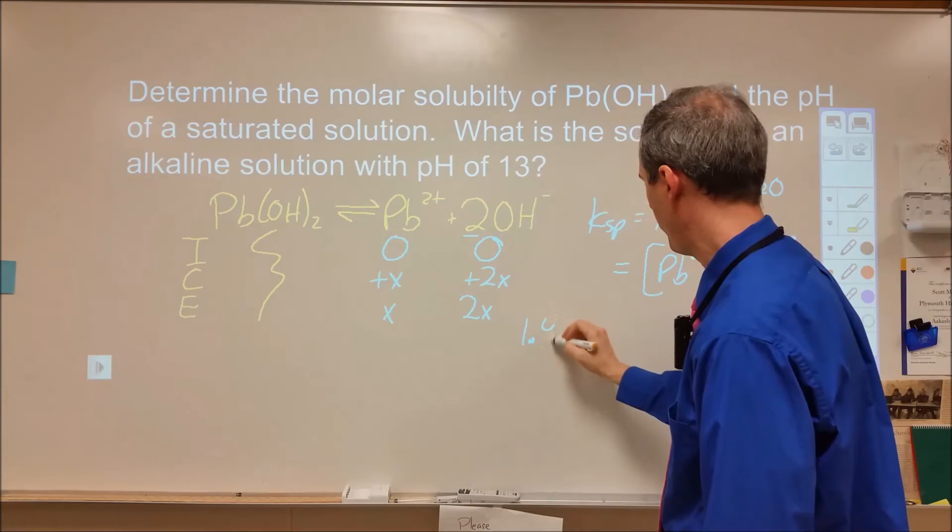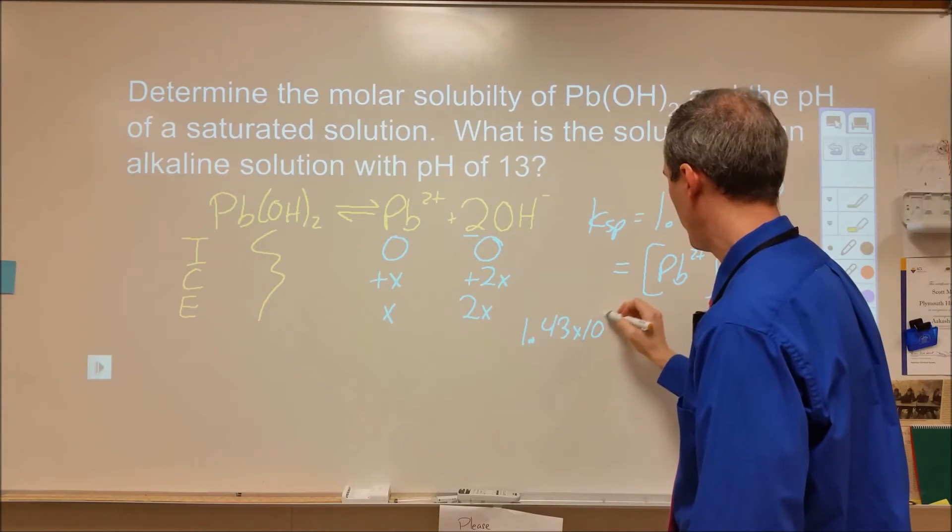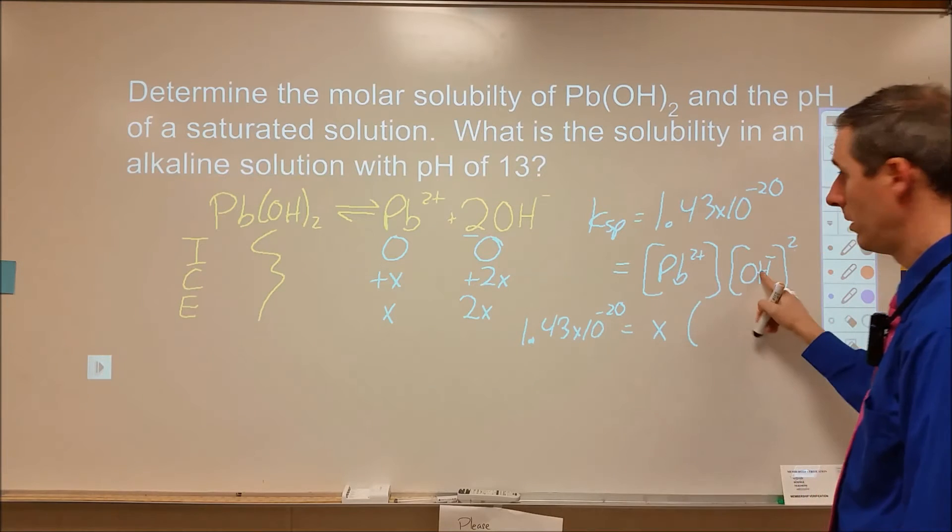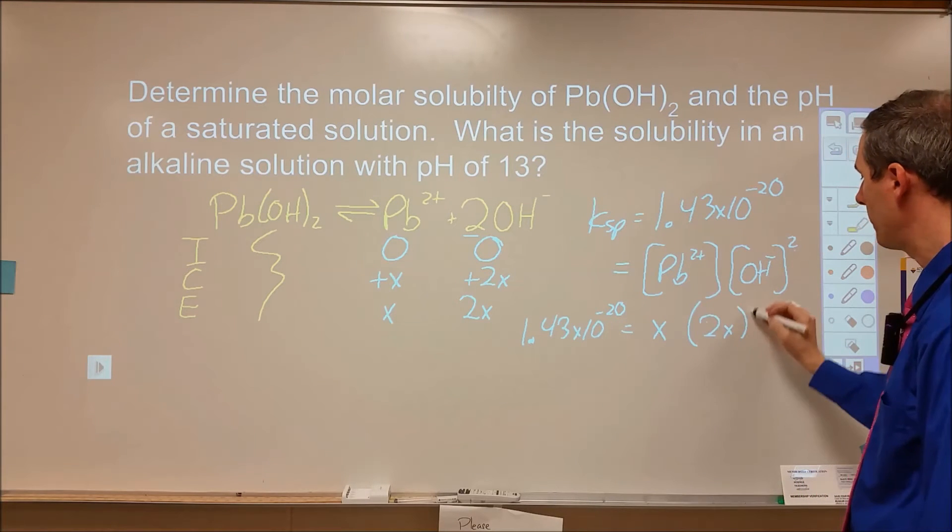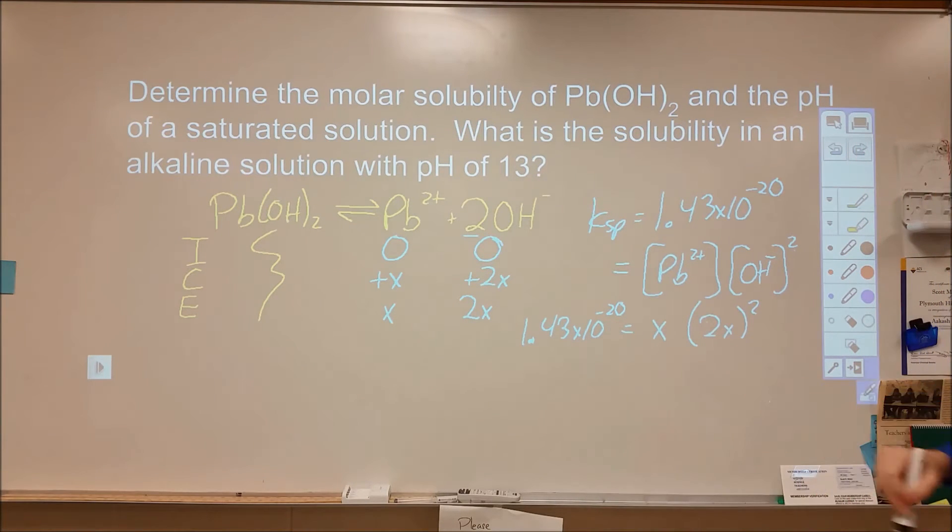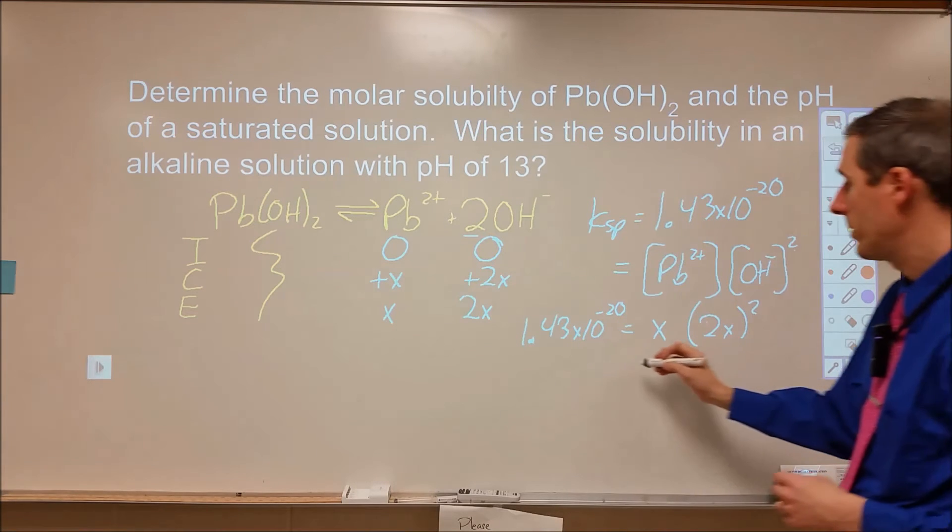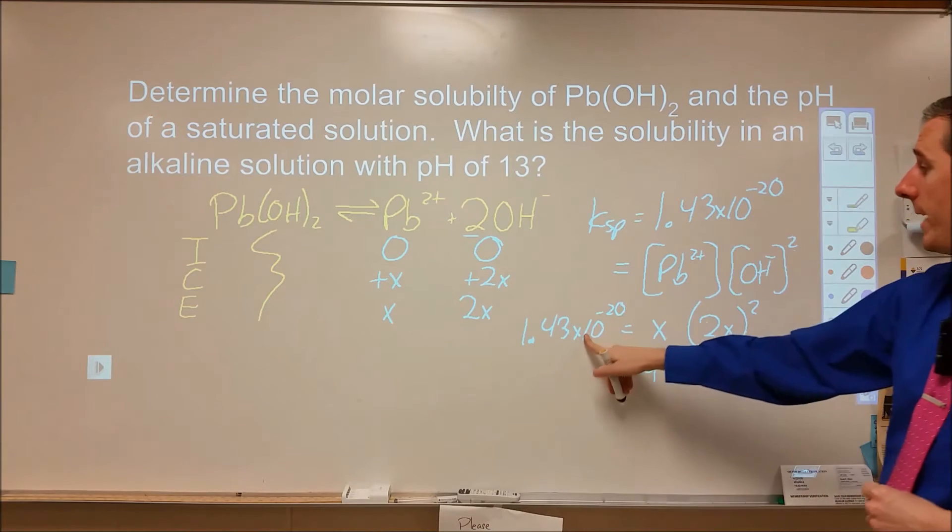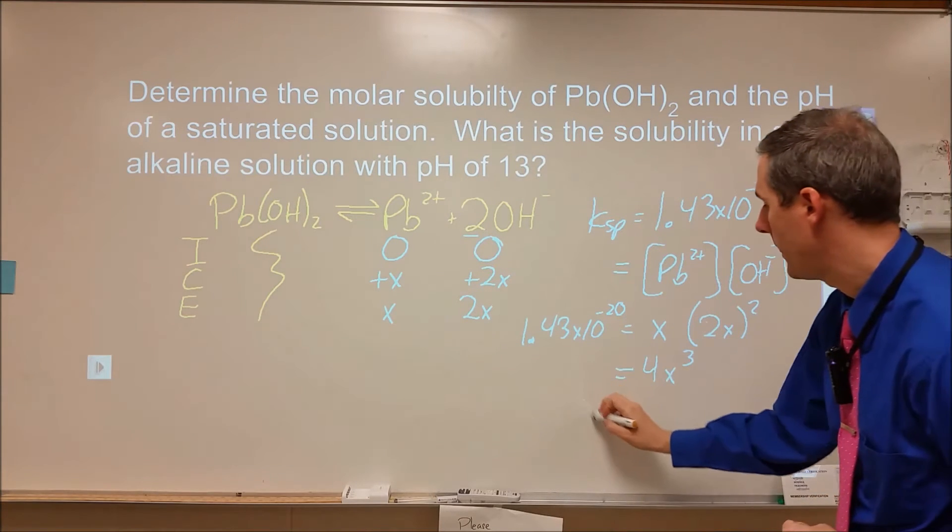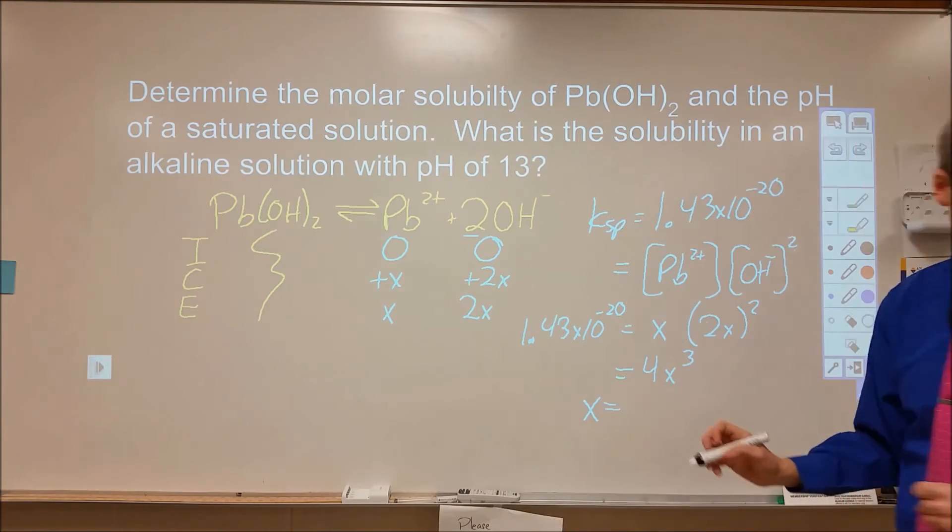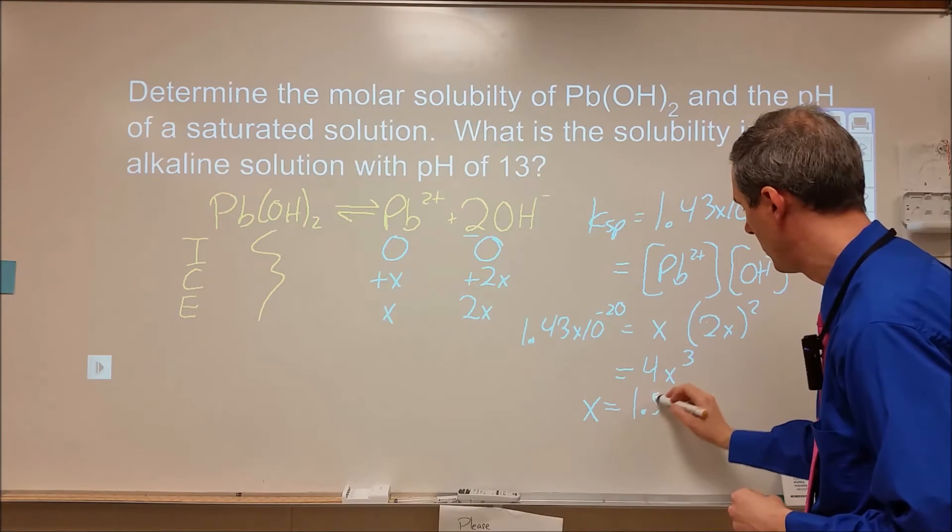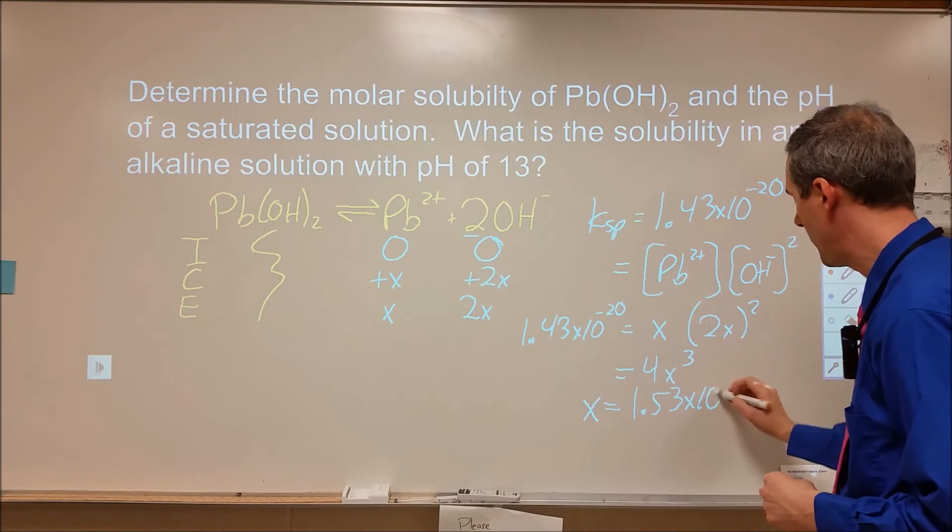From there, I can plug in 2x into this, x into this, and my KSP value. I will get 1.43 times 10 to the negative 20th equals x times 2x quantity squared. Don't forget that squared applies to the 2 as well as the x, so this equals 4x cubed. We can divide this by 4 and cube root it to find x. x ends up being 1.53 times 10 to the negative 7.